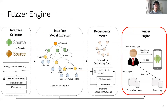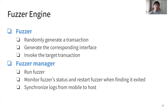Lastly, we could start fuzzing. The fuzzing engine will randomly generate a transaction and then generate the corresponding interface. Finally, the fuzzing engine will invoke the target transaction. The fuzzing manager will run the fuzzer, monitor file parameters and process status, and restart the target when a crash is found. Besides, the fuzzing manager will synchronize the results from mobile to host.